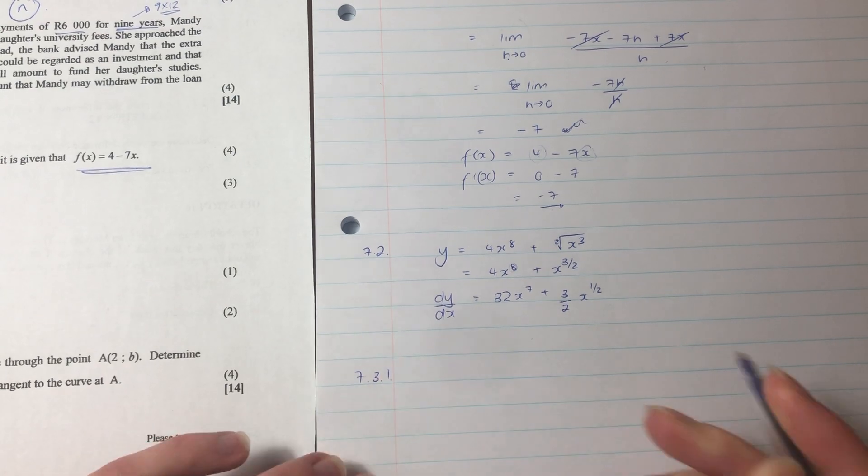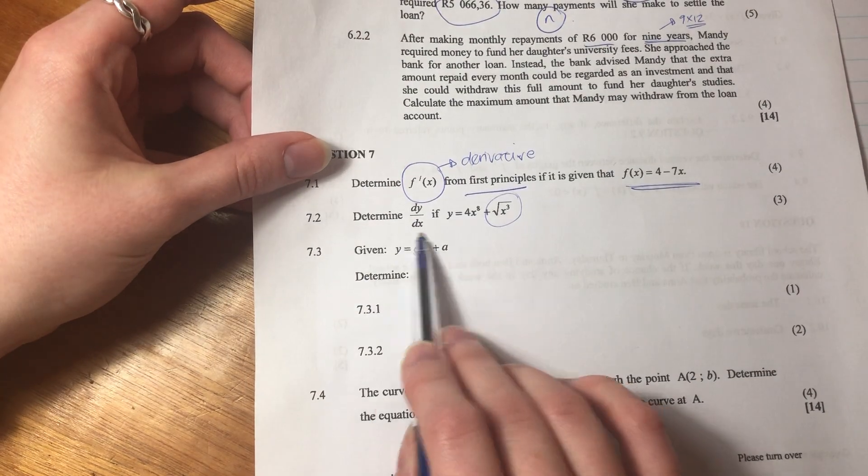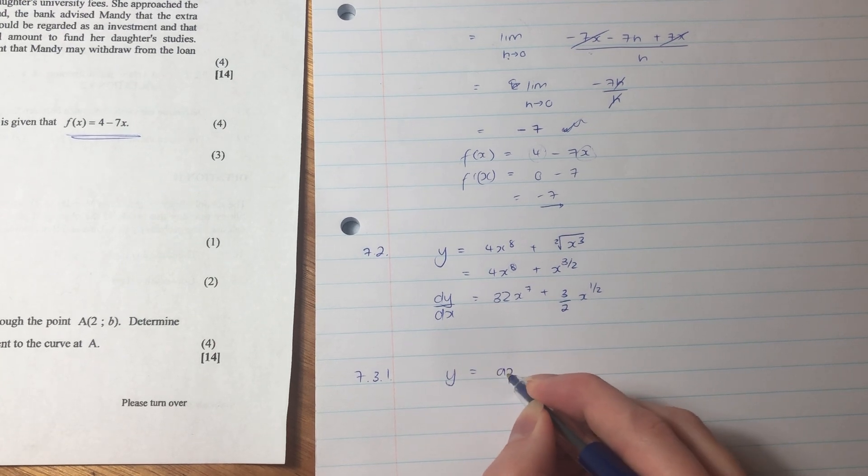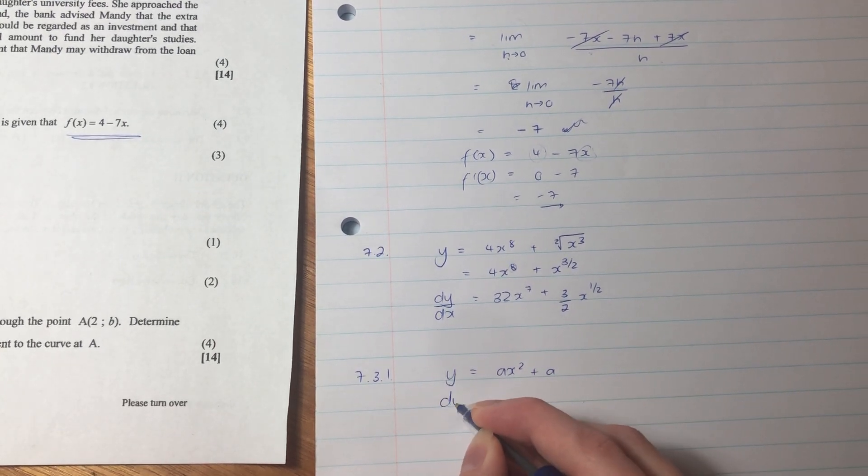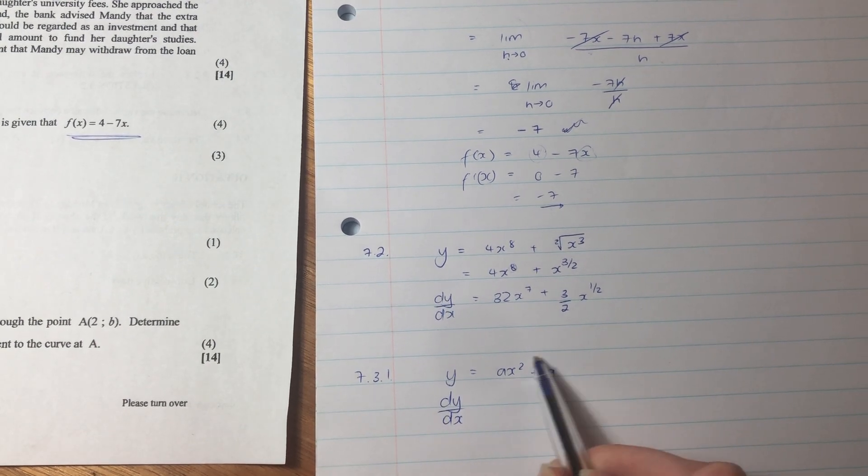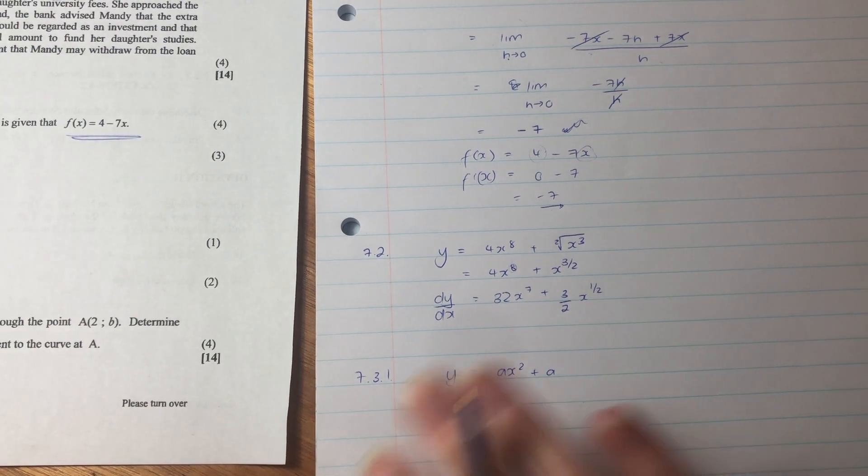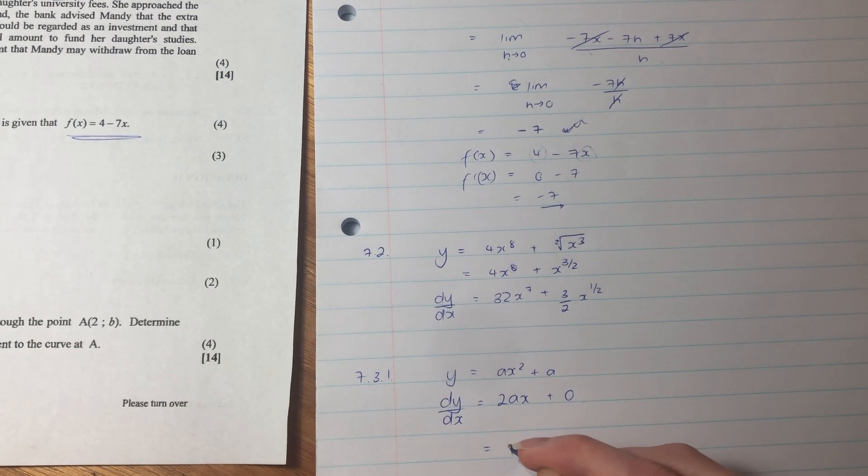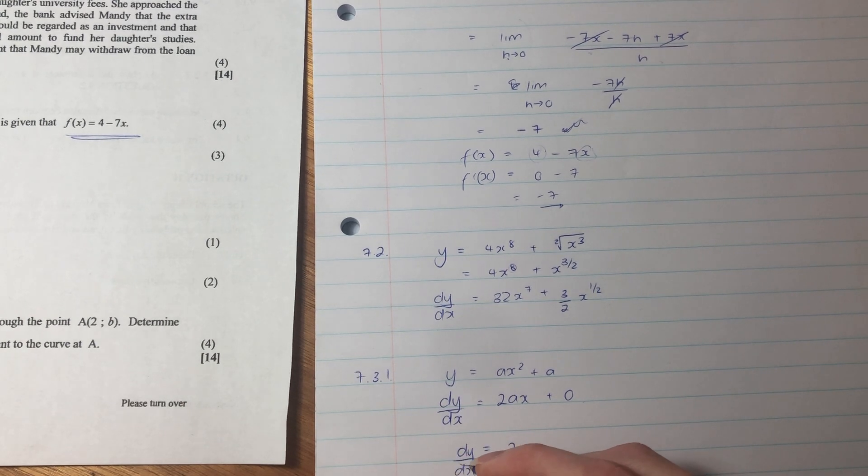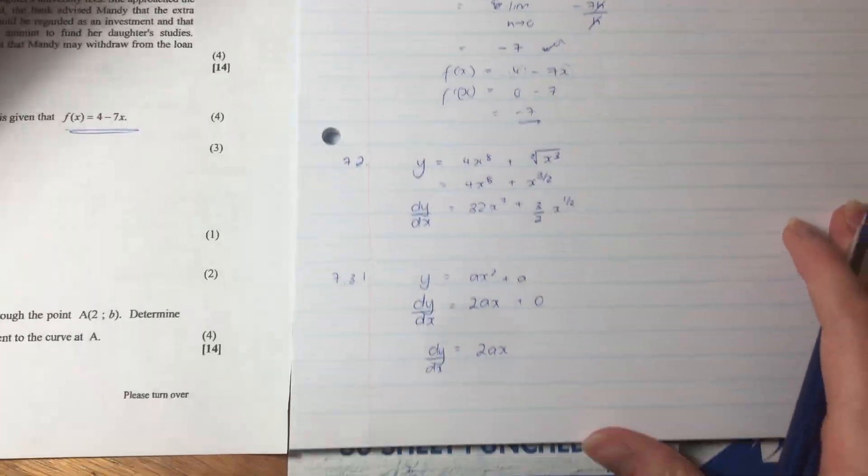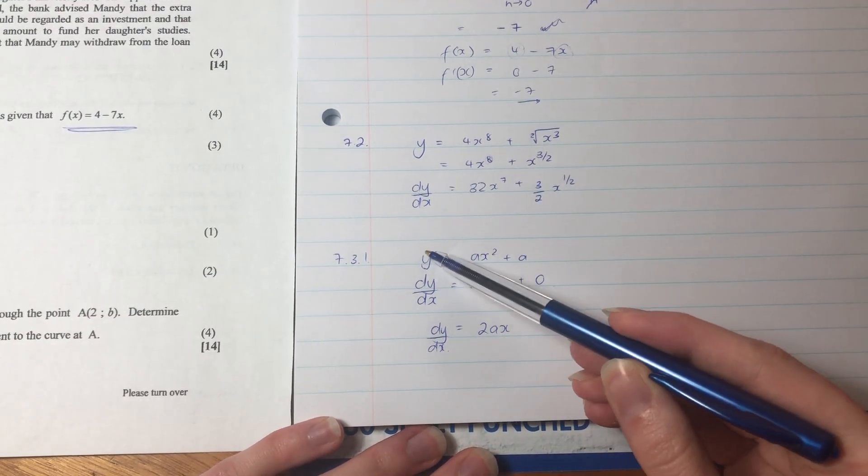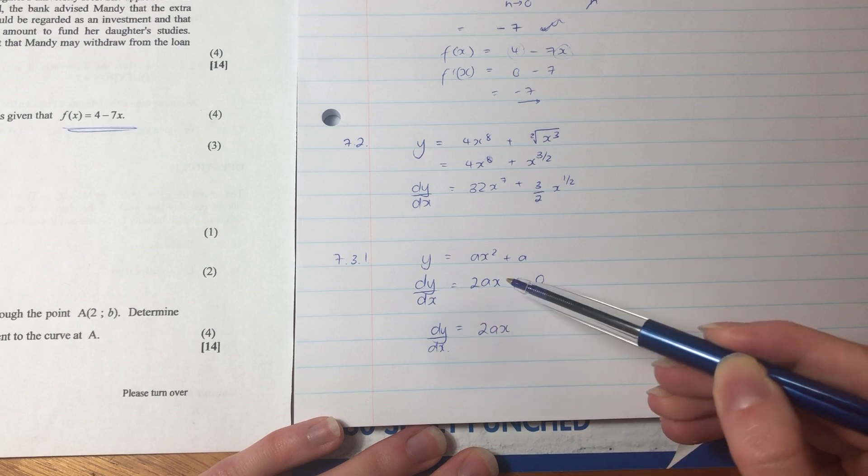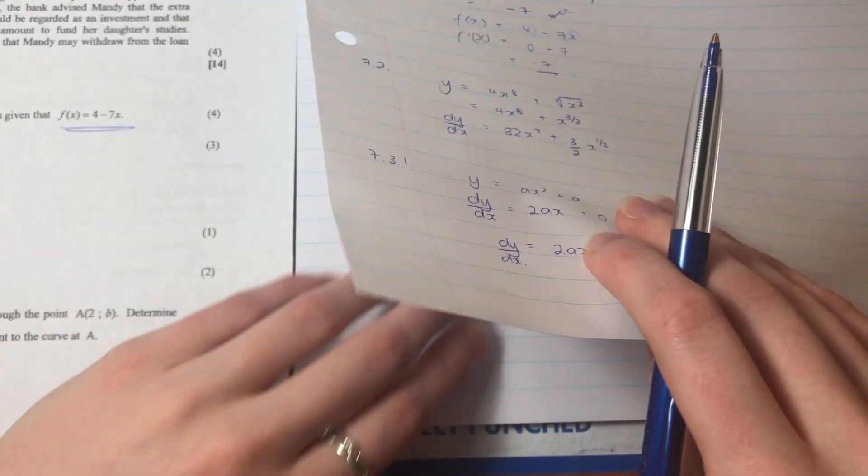So 7.3.1, it says given this equation, find these two things. So this is easy, dy by dx. We know that y equals ax squared plus a. So dy by dx says find the derivative of this equation in terms of x. All right, so we don't care about the a's. The a's are basically constants to us. So in terms of this, it would be 2ax plus 0, so it would just be 2ax. They're basically saying take this y function and get the derivative in terms of x, and that is what we've done.